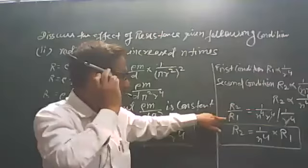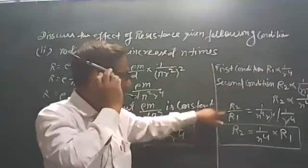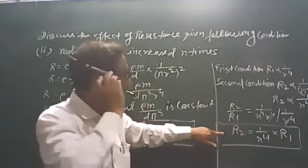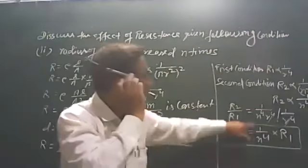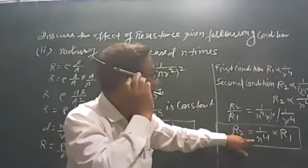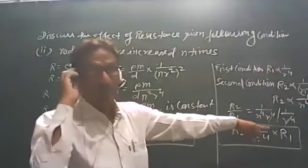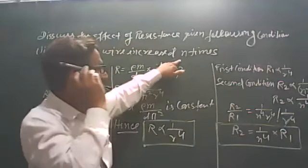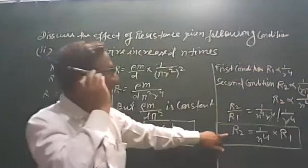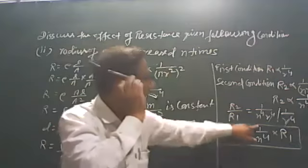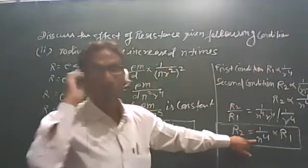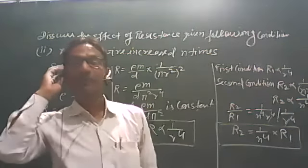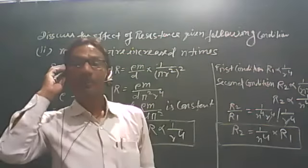R2 divided by R1: after division we can get R2 is equal to 1 upon n to the power 4 into R1. So this means that when the radius of the wire is increased n times, the resistance of the new wire is 1 upon n to the power 4 times the original resistance.